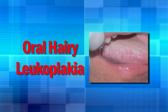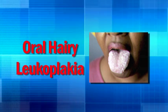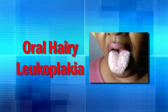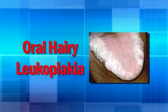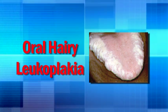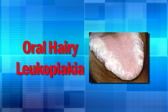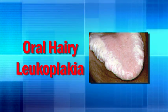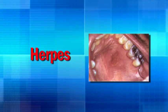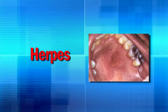Oral hairy leukoplakia, caused by the Epstein-Barr virus, presents as white corrugated lesions along the sides of the tongue that cannot be wiped away. This condition is normally asymptomatic and does not require therapy unless there are cosmetic concerns. However, it is important to note that it is observed with immune deterioration, and patients presenting with it while on antiretroviral therapy may be experiencing failure of their current regimen.